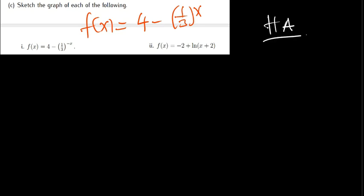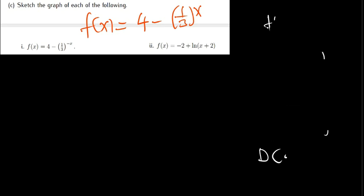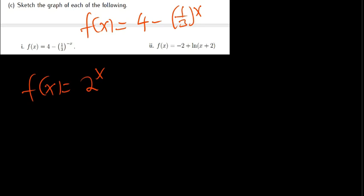The domain for exponential is from negative infinity to positive infinity, but the range is restricted. For logarithmic functions, we have a vertical asymptote, and the range is from negative infinity to positive infinity, but the domain is restricted. Under exponential we have a horizontal asymptote. Anything raised to the power x is an exponential. Natural log and log itself are logarithmic functions.